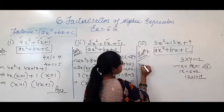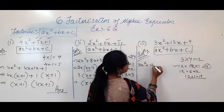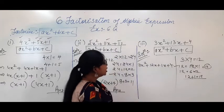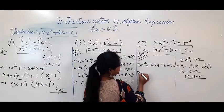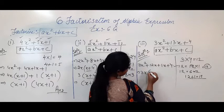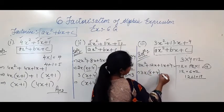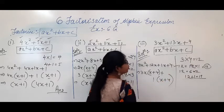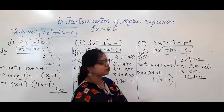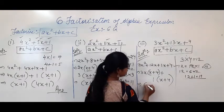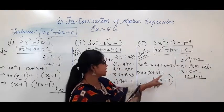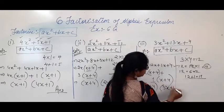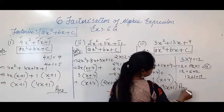So I write this as 3x² + 12x + 1x + 4. Now take common: from the first two terms, 3x common gives 3x(x + 4). From the remaining, taking 1 common gives 1(x + 4). So x + 4 is common. Write (x + 4), and what is left is (3x + 1). So (x + 4)(3x + 1) is the answer.